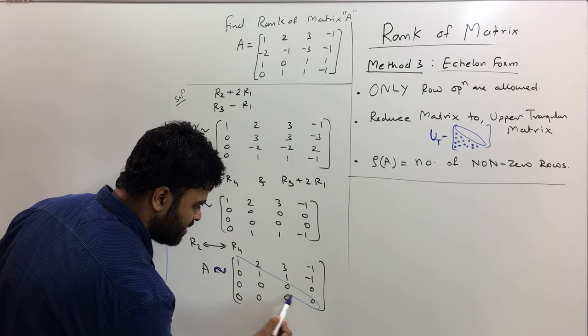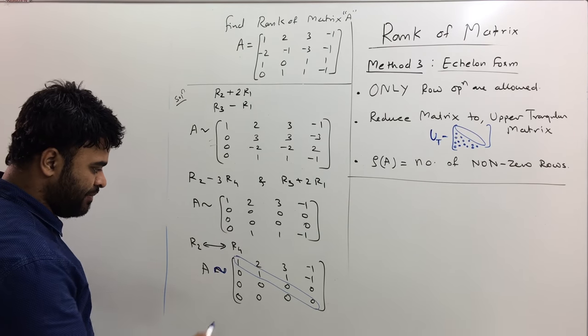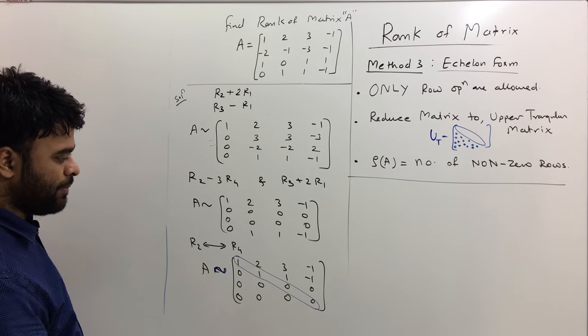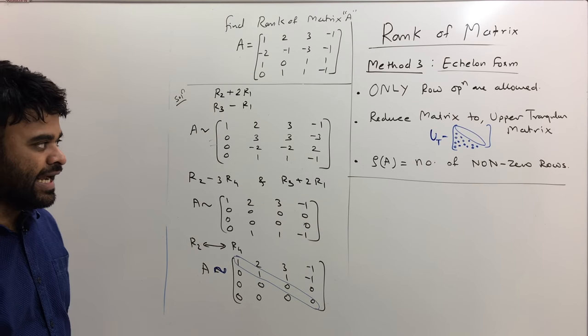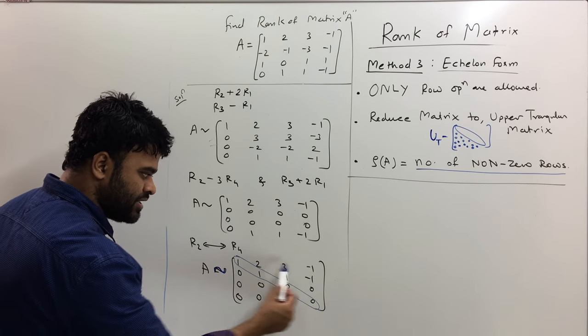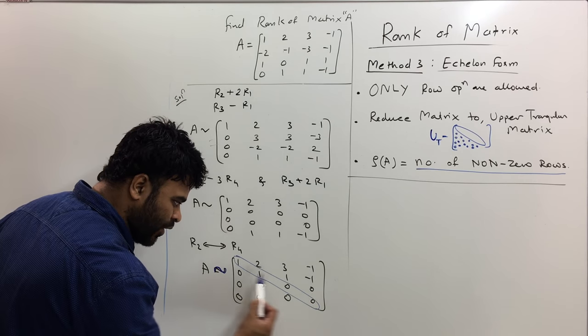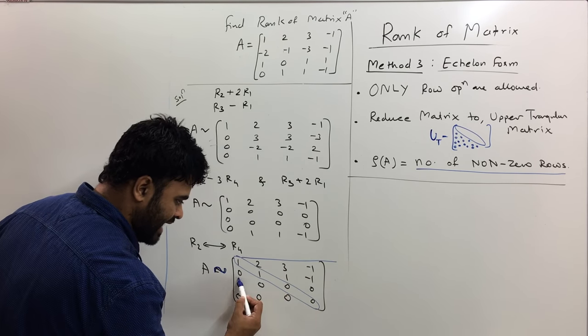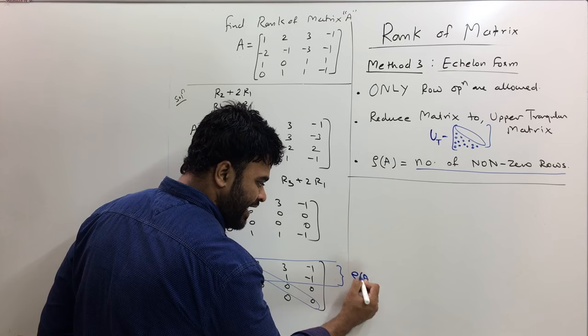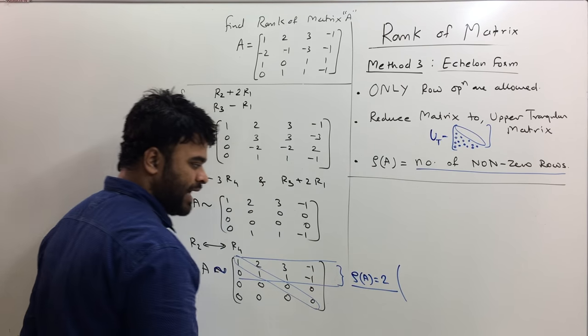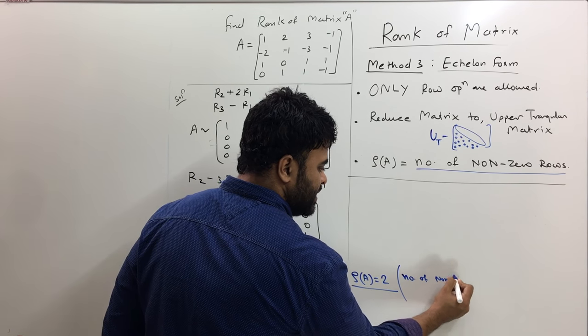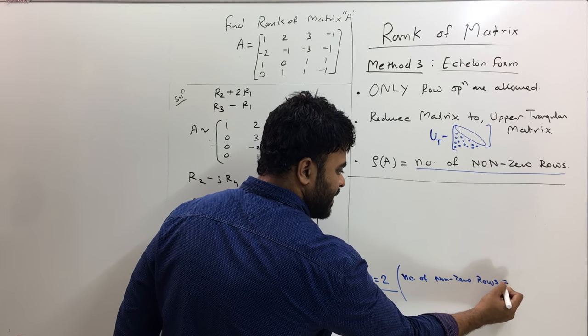Because every value below the diagonal are all zero, this is an upper triangular matrix. Now as soon as you get upper triangular matrix, the rank of matrix is written as the number of non-zero rows. If you see the first row, this is a non-zero row, and the second row is also a non-zero row. These two rows are non-zero rows. From here I will get rank of A is equal to 2.